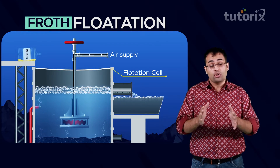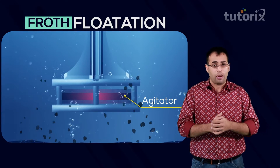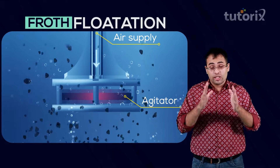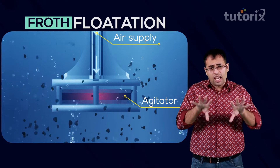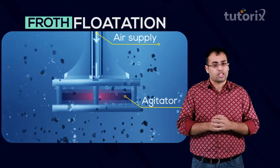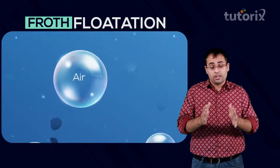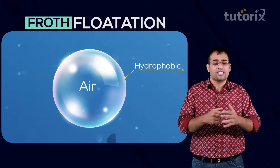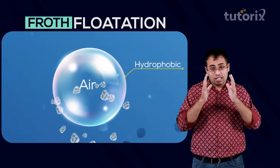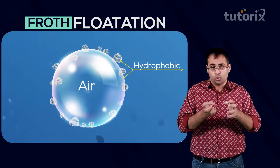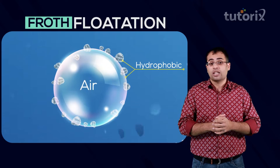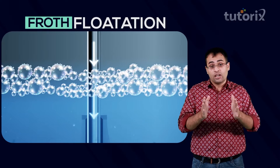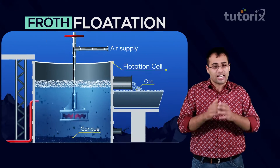This suspension of ore is continuously mixed or agitated with the help of a rotating paddle. Next, air is pumped into the suspension at high pressure, and because the pressure is high, the air breaks up into tiny air bubbles spread throughout the volume of the suspension. These air bubbles are highly hydrophobic and less dense than water, so they attract hydrophobic ore particles, which attach to the bubbles and rise to the surface as froth. From the surface, this froth can be skimmed off and the ore particles recovered.